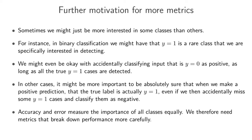This can be particularly problematic if we're very interested in a specific class that's not the most common one. In binary classification, we might have that the positive class is very rare, but we're most interested in detecting when that positive class occurs. We might even be okay with accidentally classifying a true negative as positive, as long as all the true positive cases are detected. In other cases you might want to be absolutely sure that when you make a positive prediction, it's actually a positive - even at the cost of missing some positive cases. Accuracy and error measure class importance equally, so we need other metrics.